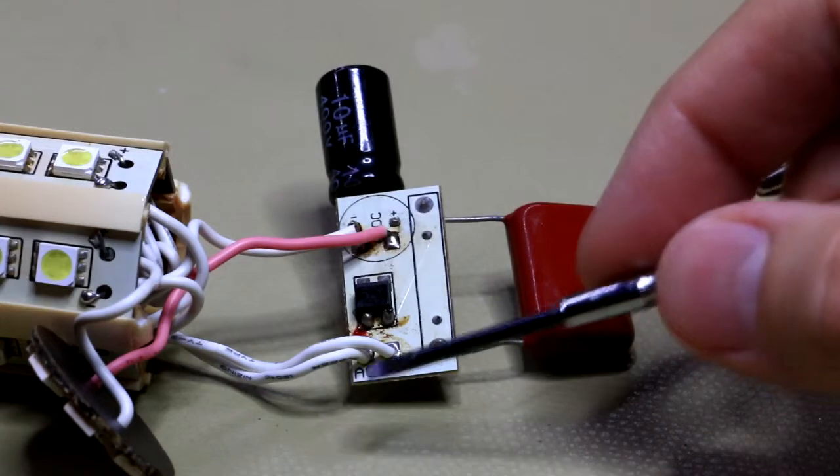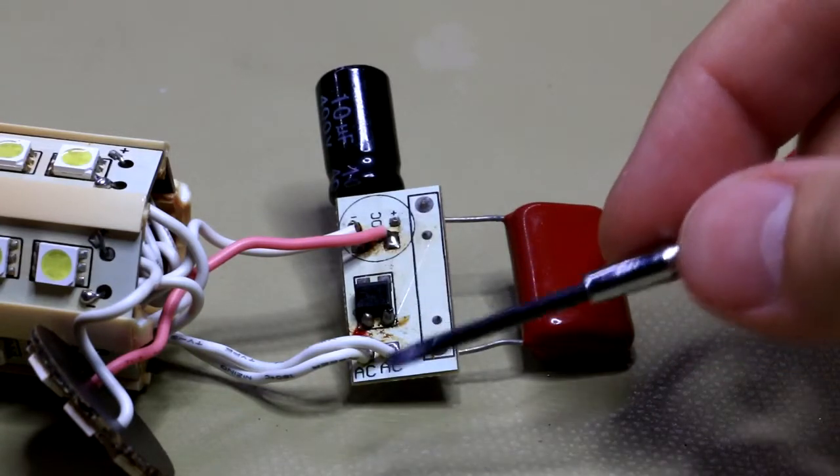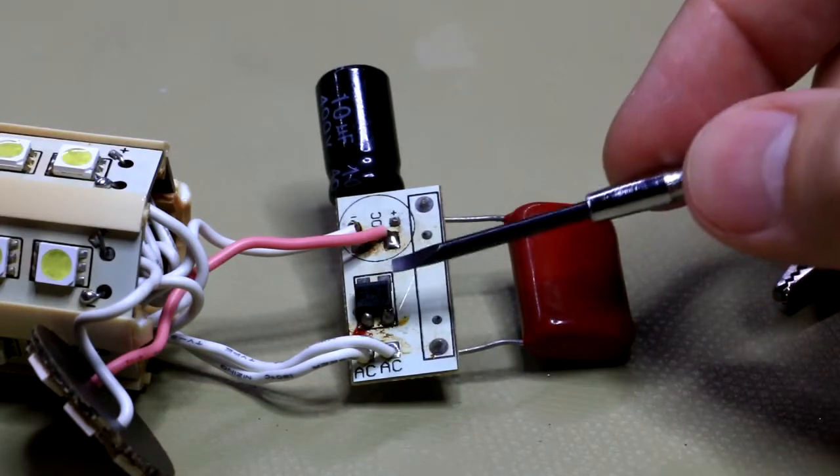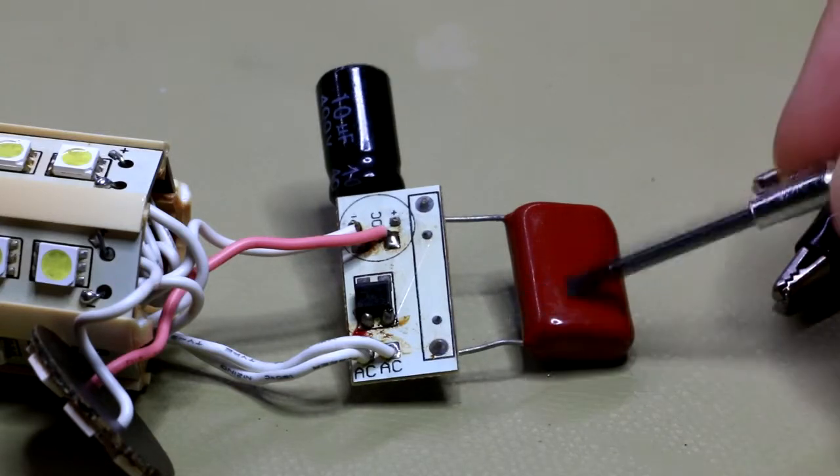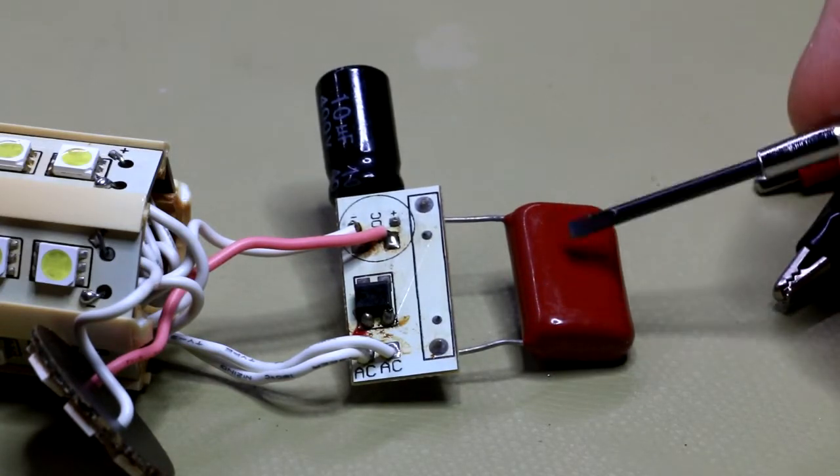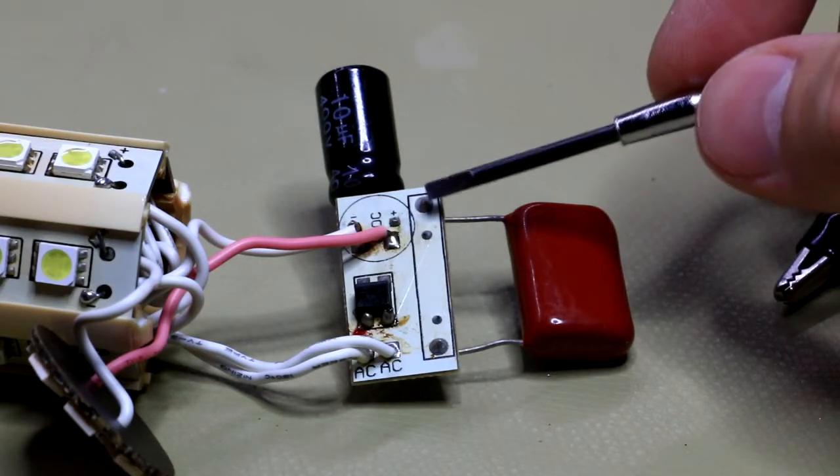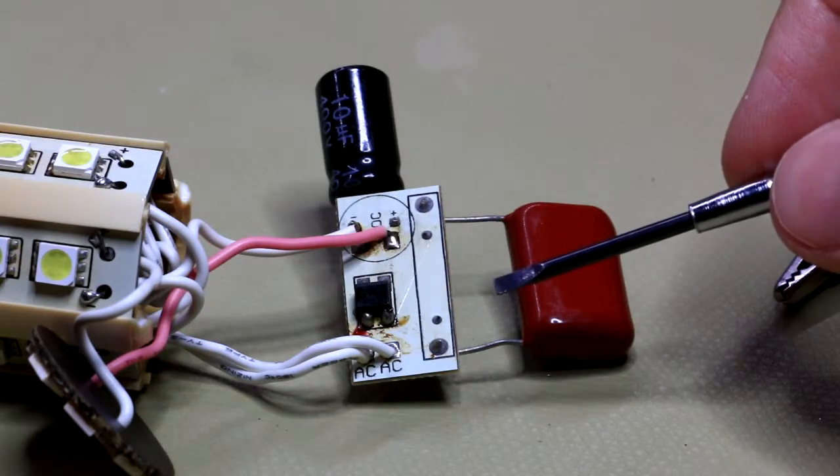The AC feeds in on this side, it's labeled like that. But the AC does not feed directly into this full wave rectifier. First it goes off to this side, feeds through the one and a half microfarad capacitor up to the top. And then from there it feeds into the AC input of the full wave rectifier.